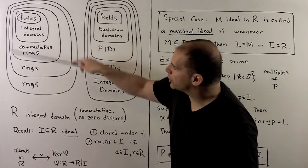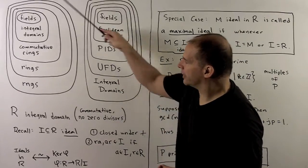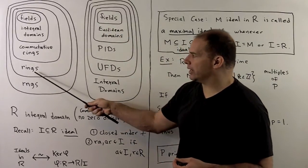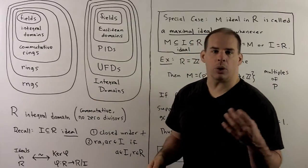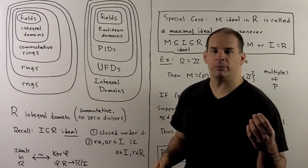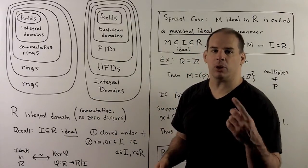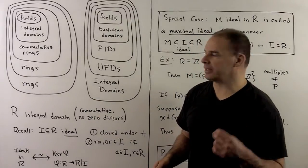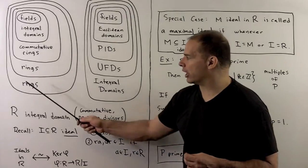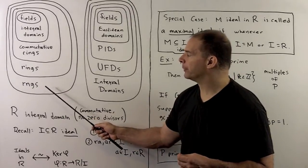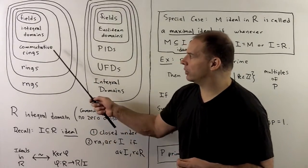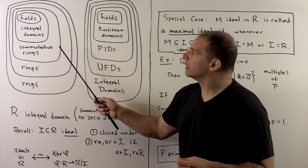So, what we have so far is in this picture. We have rings — we always assume associative multiplication and multiplicative identity. If we drop the identity, we get an RNG. Moving to the inside, we have commutative rings.